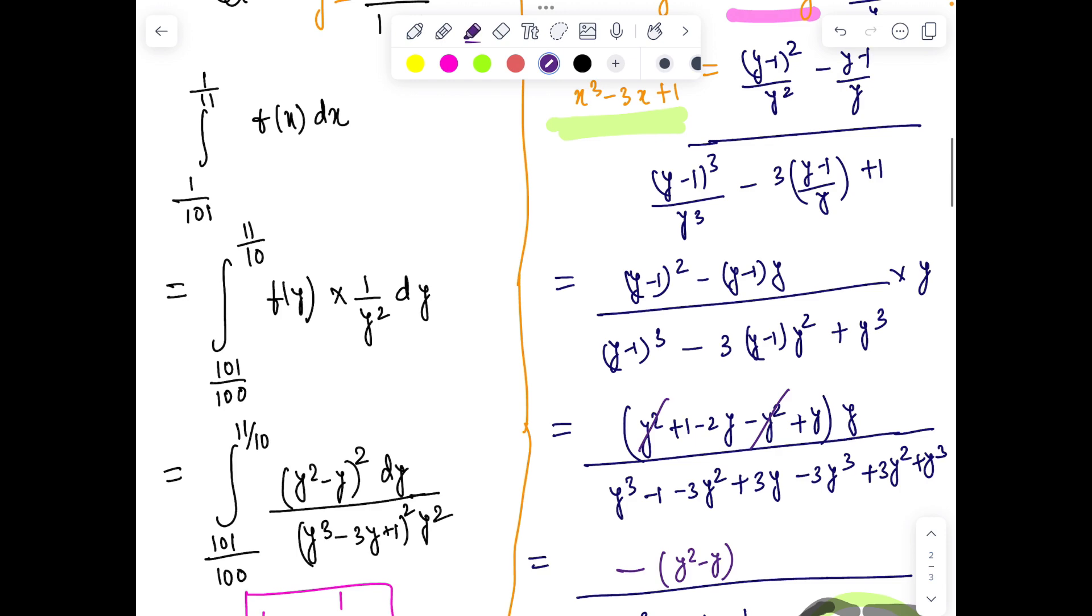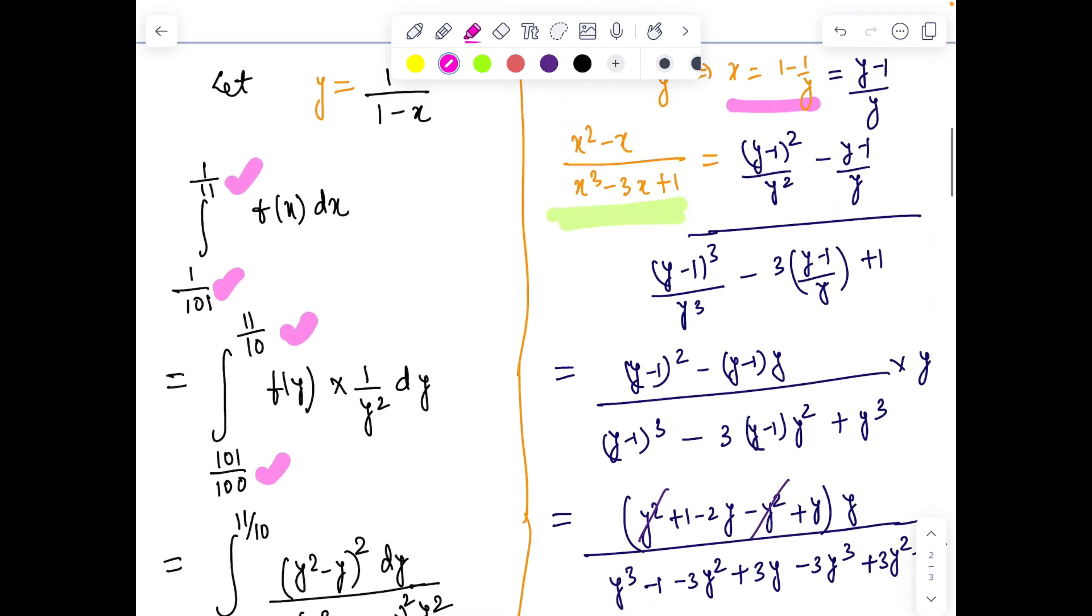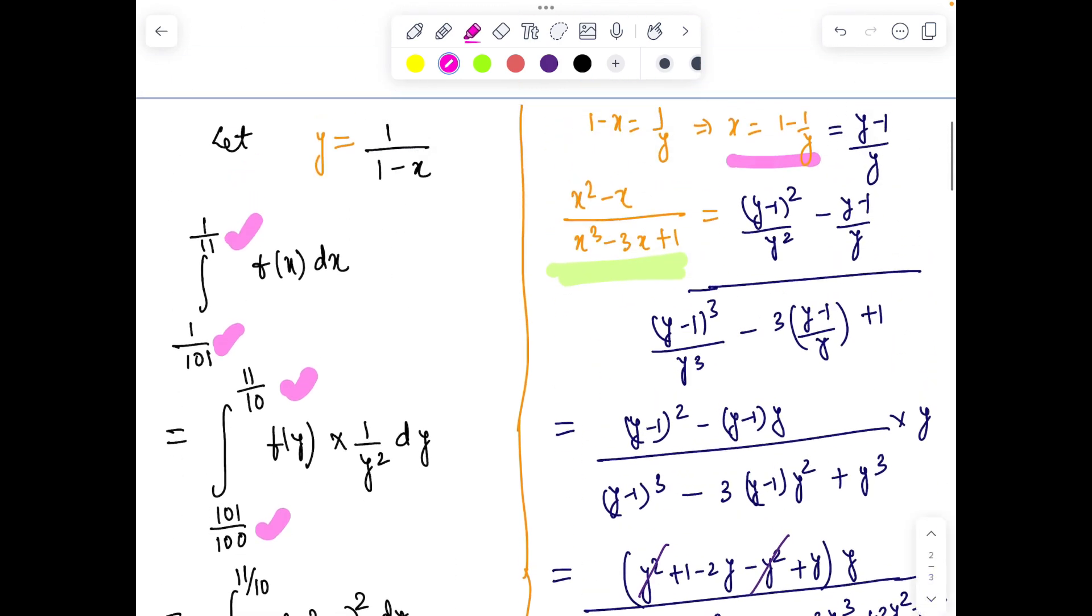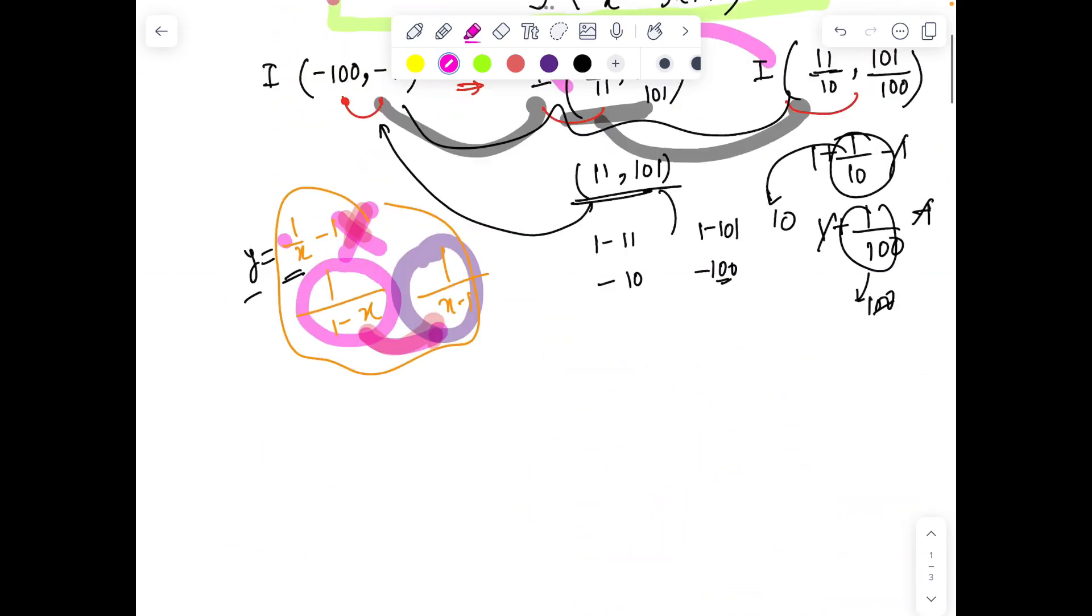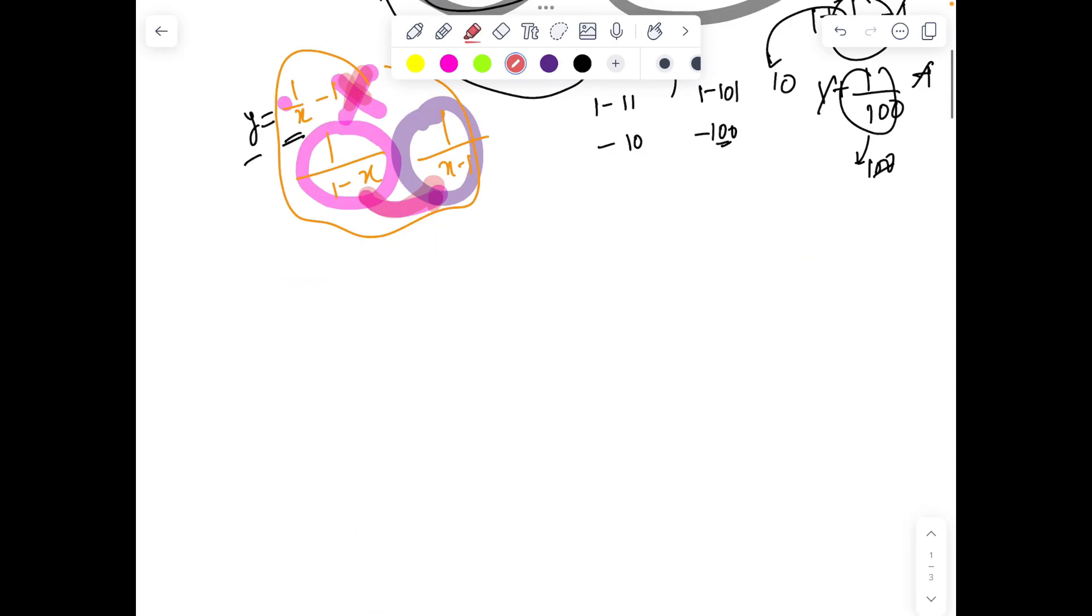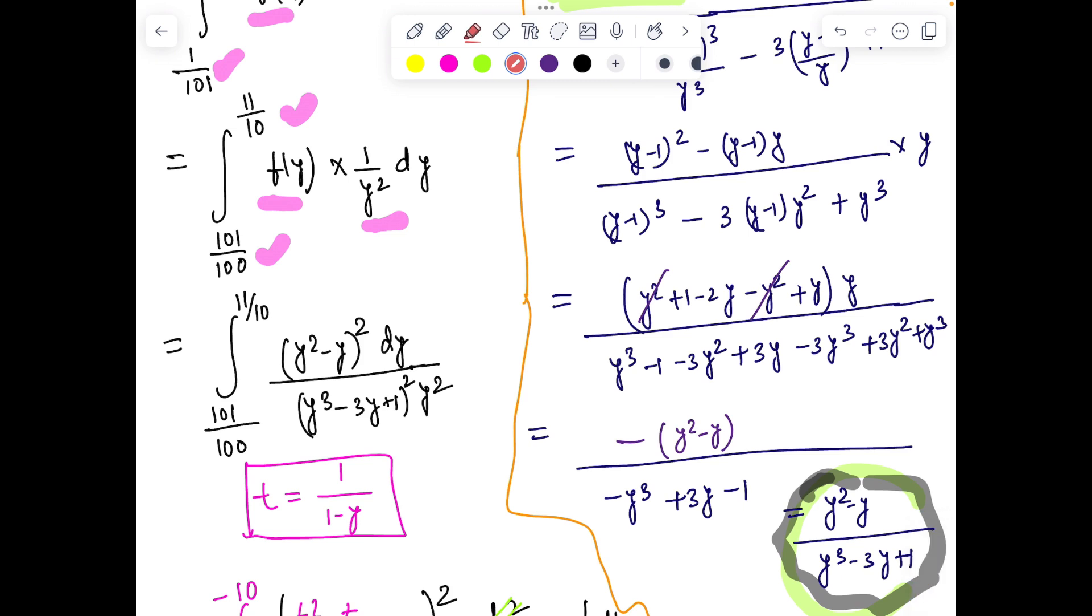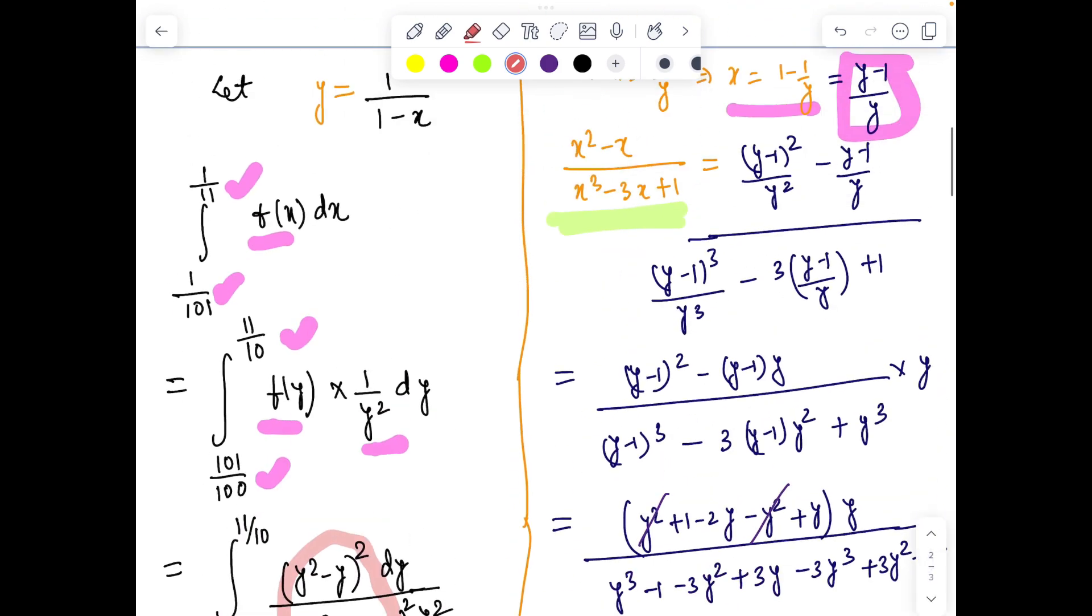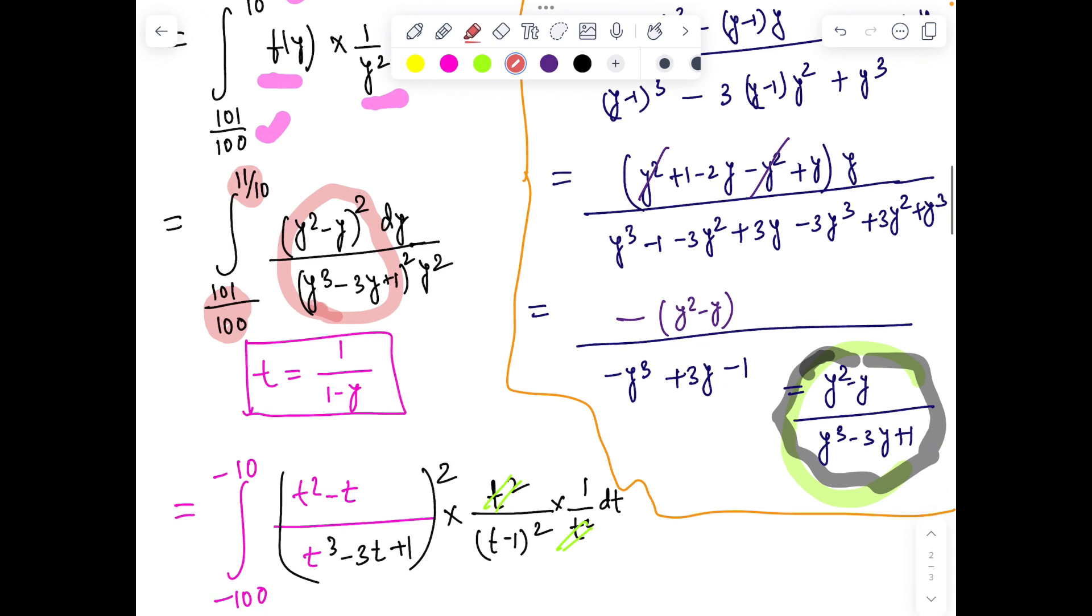That's good news because now I(1/11, 11/10) is getting transformed to I(1/100, 11/10). By putting x here, you can see x = (y-1)/y gives this expression. I've defined f(x) to be this entire squared expression. With that definition, if we convert this, the final expression becomes f(y)dy/y², which relates I(1/11, 11/10) to I(1/100, 11/10).